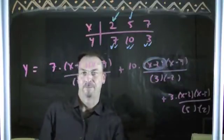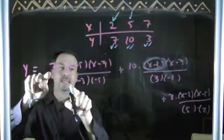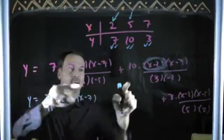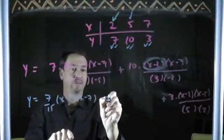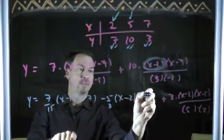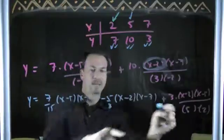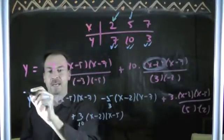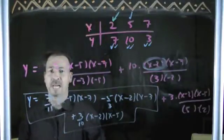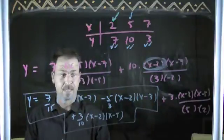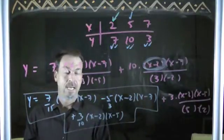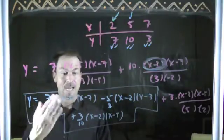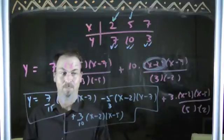I can make this look slightly friendlier if I like. I can do a bit of simplification. 7 fifteenths times (x minus 5)(x minus 7). 10 over negative 6 is negative 5 thirds times (x minus 2)(x minus 7). And the third piece, which is 3 over 10, plus 3 tenths (x minus 2)(x minus 5). That looks a bit friendlier. And I'm not going to bother doing any more work. Because if the question was just find a quadratic that fits the data, got one. Done. Don't do any extra work. If I need to do something with this later on, I can. But the context will tell me what I need to do with it. Right now, I've got no context for doing any extra work. I'm not going to do any extra work. Perfect as it is.